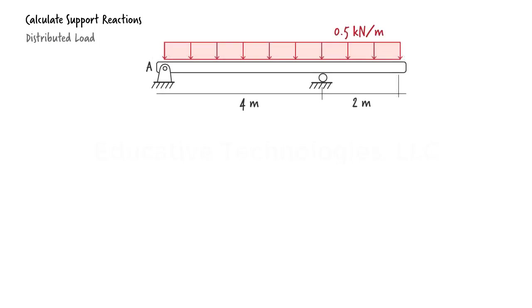Let's draw the free body diagram for the beam. For the purpose of calculating the support reactions, we can replace the distributed load with its equivalent concentrated load. The magnitude of this concentrated load equals the area of the rectangle. The position of the load is at the geometric center of the rectangle, which in this case is the midpoint of the beam.